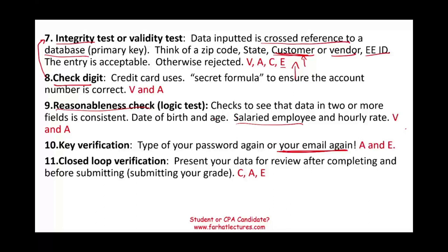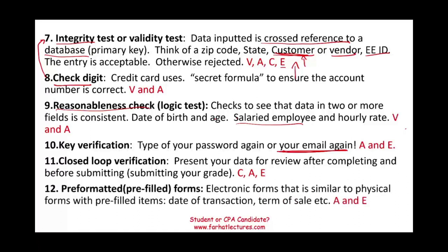Closed loop verification means that after you input all the data, the system presents all your answers for review before you submit. For example, when submitting student grades, the system shows every student with their grade after the first submit. If you agree, you click submit a second time. If there's a mistake, you can go back and change it. This is called closed loop verification.